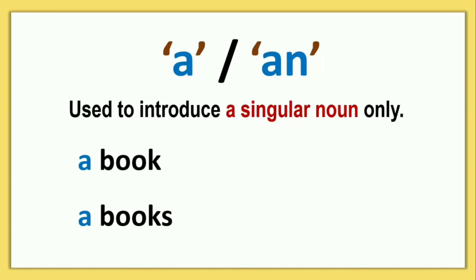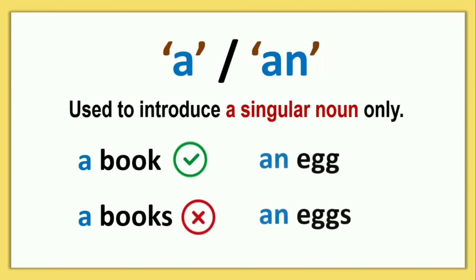So A book is correct, but AN egg — an egg is correct, while A egg is wrong. These are examples of correct article usage.